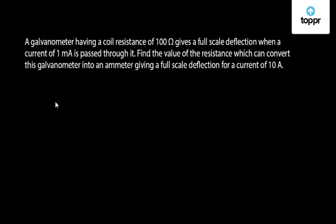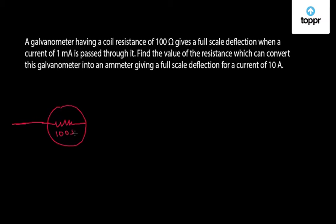Let us try to solve this problem. First of all, let us draw the setup which has been given in the question. So let us say this is the galvanometer and it has a coil resistance of 100 ohms inside it, and a current of 1 mA is passed through it which gives the maximum deflection.